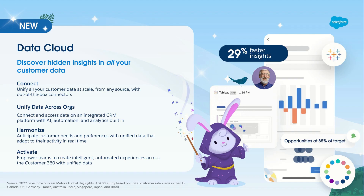This is where Data Cloud comes in. With Data Cloud, you can connect and unify all your customer data at scale, from any source, with APIs or our out-of-box connectors. For customers with multiple orgs today, this will also help you unify data across different CRM systems or orgs to better use AI, automation, and BI. With Data Cloud, you can harmonize data in a single source-of-truth model that makes downstream systems easier to work with, and you can act on the data to automate processes or provide next best actions.